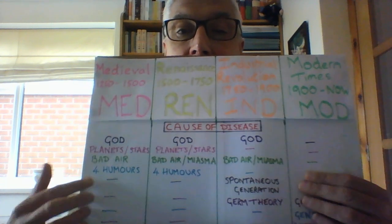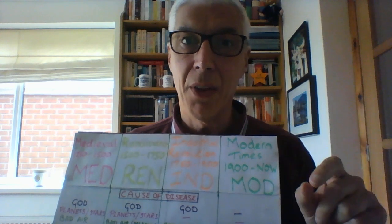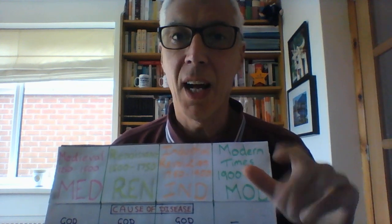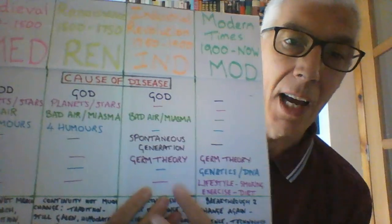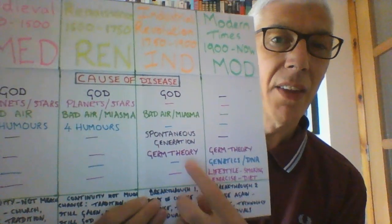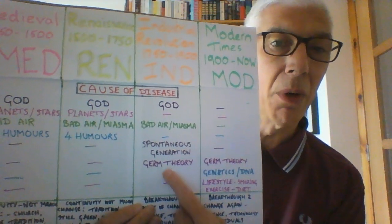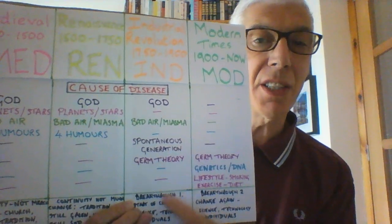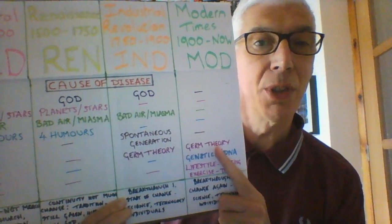Moving into the Industrial Revolution: spontaneous generation. As they got microscopes, they began to realize there were germs, but at first they got the wrong idea — they saw germs in wounds and thought the body had created them, not realizing the germs were coming in from outside. That understanding came about in 1861 with Louis Pasteur and germ theory — the first huge breakthrough that begins to destroy those old ideas. Massively important. There's a video on it — germ theory 1861, breakthrough number one — the first really big, massive change, which carries on into modern times.